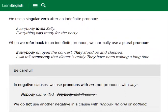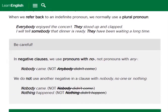We use a singular verb after an indefinite pronoun. For example: 'Everybody loves Sally.' 'Everything was ready for the party.' Singular verbs are used after 'everybody' and 'everything.' However, when we refer back to an indefinite pronoun, we normally use a plural pronoun. 'Everybody enjoyed the concert. They stood up and clapped.' 'I will tell somebody that dinner is ready. They have been waiting a long time.'